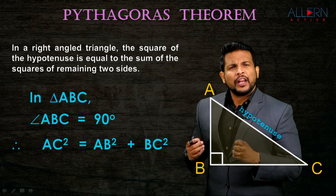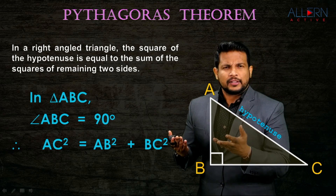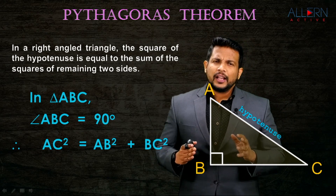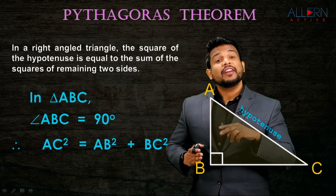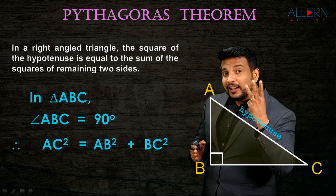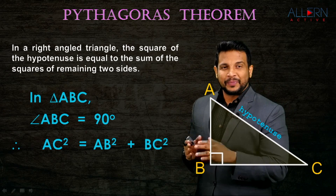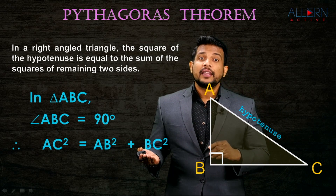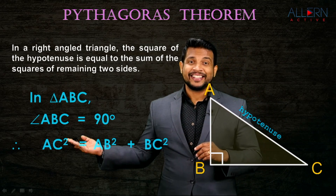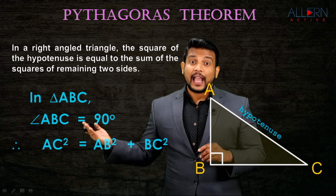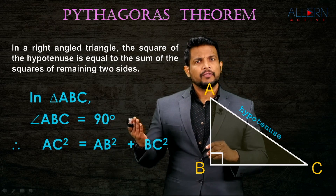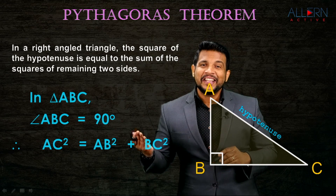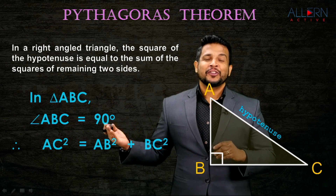Now let's say we have the theorem - when are we going to apply this? In any right angle triangle, if you know the length of two sides, we can find the length of the third side by using this theorem. If you know AB and BC, we can find AC. If you know AC and AB, we can find BC. If you know AC and BC, we can find AB.